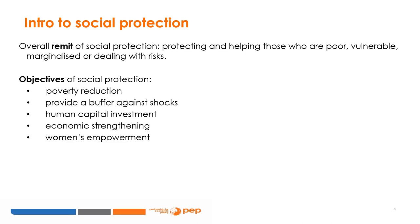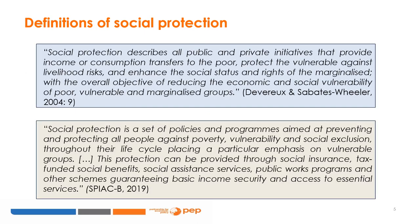Given this broad remit, objectives of social protection vary widely and range from poverty reduction, human capital investment, economic strengthening, to women's empowerment. There is no single definition of social protection. Different organizations and agencies establish the scope and remit of social protection in line with their own mandates and priority areas.